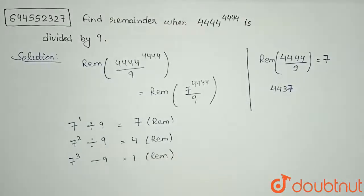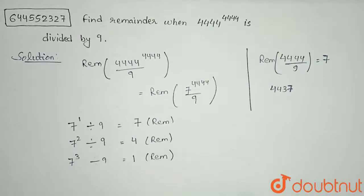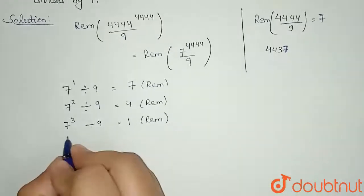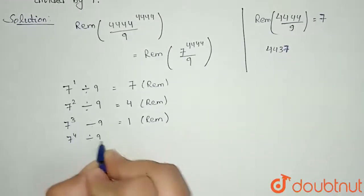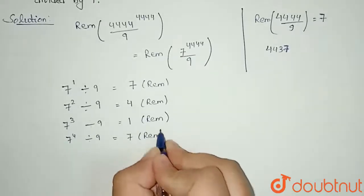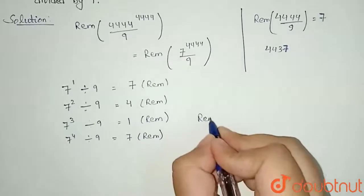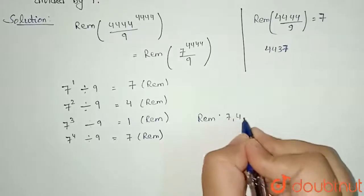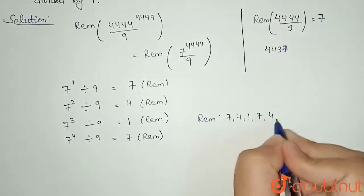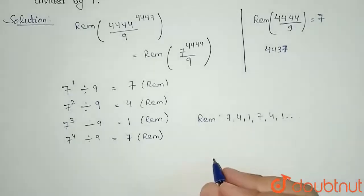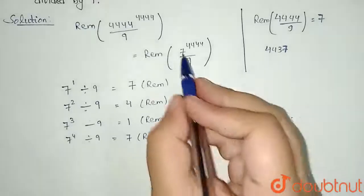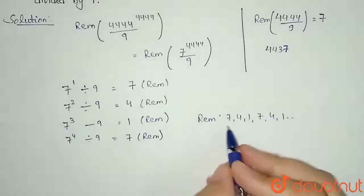This is my remainder when 7 cube is divided by 9. Now if I see for 7 to the power 4, then 7 to the power 4 divided by 9, again my remainder is coming 7. So I can see the pattern in remainders: it will be 7, 4, 1, again 7, 4, 1. This will continue. So we need 7 to the power 4444.